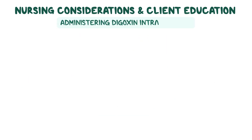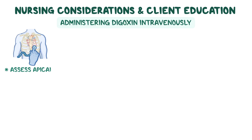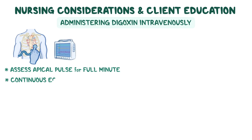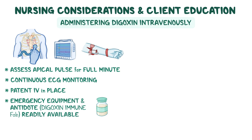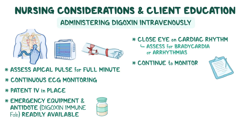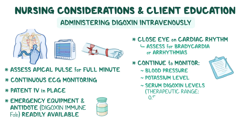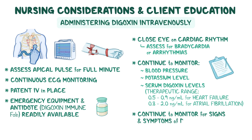When administering digoxin intravenously, be sure to assess your client's apical pulse for a full minute and ensure they are on continuous ECG monitoring and have a patent IV in place. Next, confirm that both emergency equipment and the antidote digoxin-immune FAB are readily available. Keep a close eye on their cardiac rhythm, assessing for bradycardia or arrhythmias, and continue to monitor their blood pressure, potassium level, and serum digoxin levels for the therapeutic range of 0.5 to 0.9 nanograms per milliliter when treating a patient with heart failure, and 0.8 to 2.0 nanograms per milliliter when treating a patient for atrial fibrillation. Lastly, continue to monitor your client for signs and symptoms of digoxin toxicity.